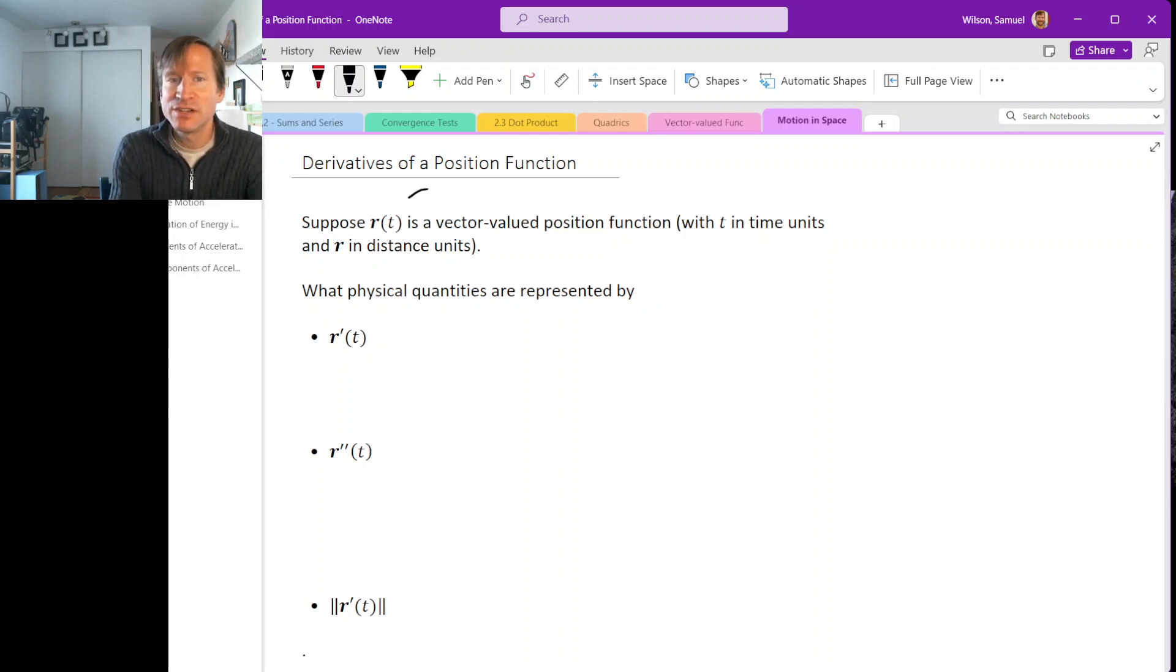Suppose we have a vector-valued function that tells us the position of some object that's moving around. Notice that because it is telling us position as a function of time, t has to be in time units—usually seconds, unless I say otherwise.